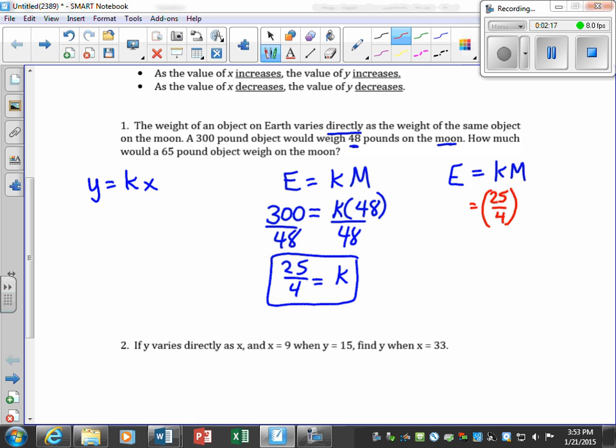And now I'm going to read my last sentence. How much would a 65-pound object weigh on the moon? So we want to know how much a 65-pound object would weigh on the moon. The moon is the thing in question, so M is the thing that we're going to solve for, the variable. If we're just solving for a variable, if you have a fraction times a variable, the way you solve that is to multiply by the reciprocal.